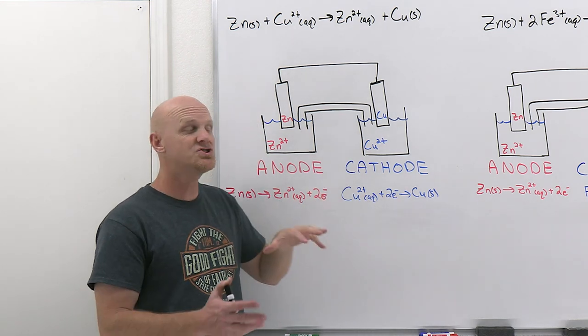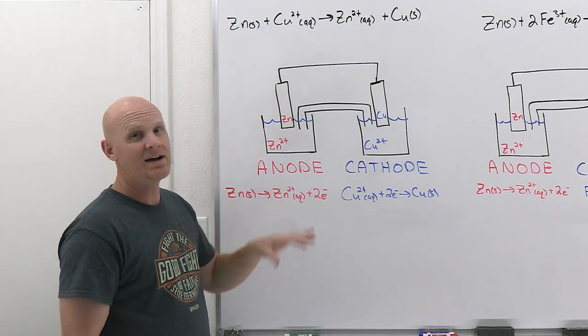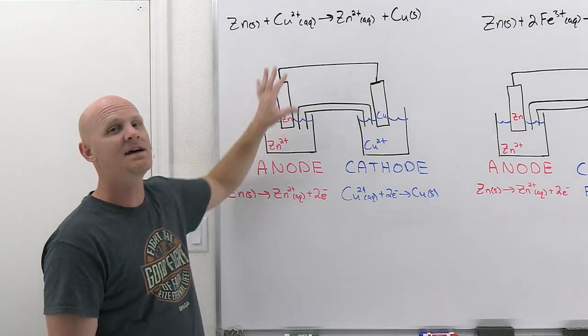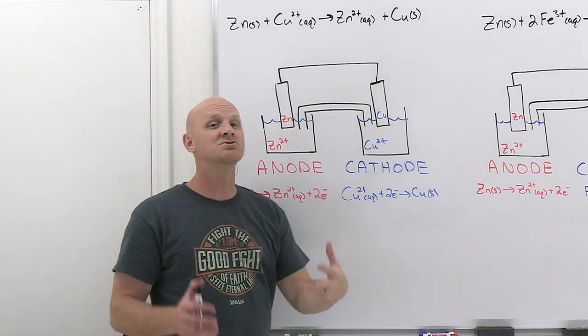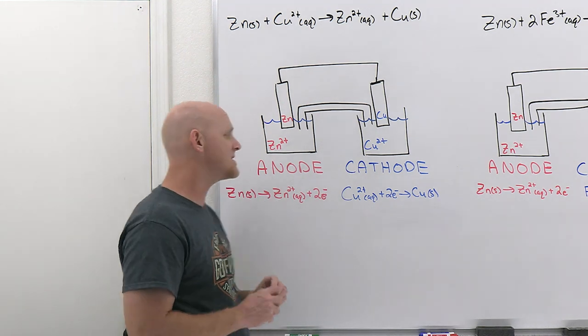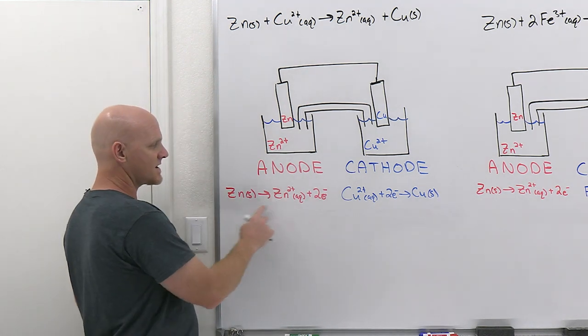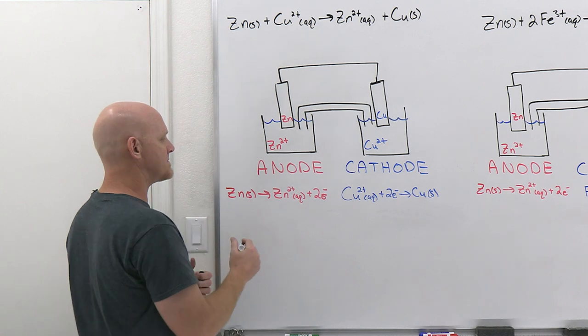At the cathode is copper 2+ going to copper. Now, the cell notation, just like the picture we drew here, is always going to have the anode on the left and the cathode on the right. That is mandatory for proper cell notation here.